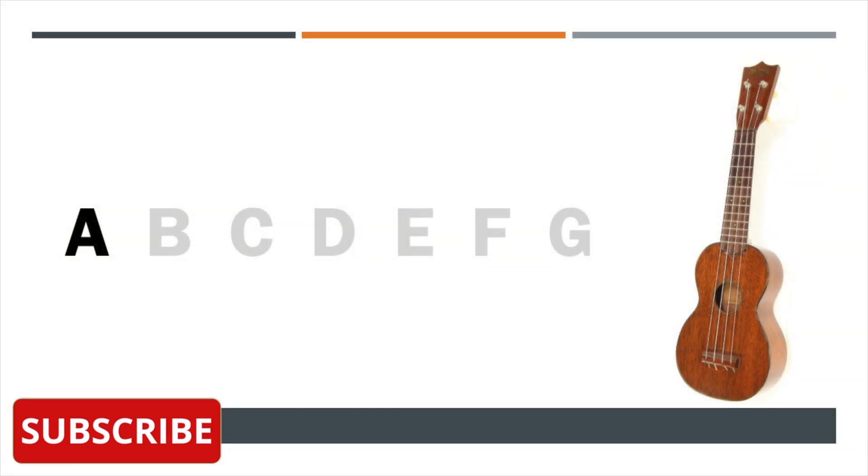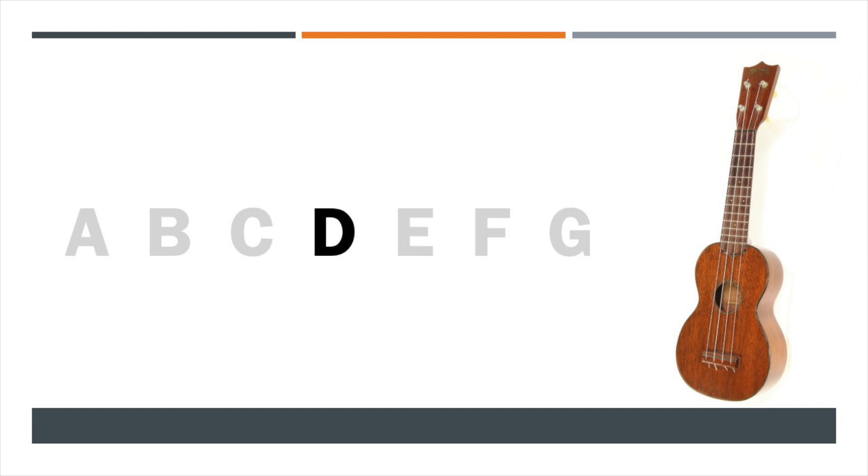The main thing to know with the musical alphabet is that we only use the first seven letters of our standard Latin or Roman alphabet, so we just have the letters A, B, C, D, E, F and G. Once we've got to G, the next letter would be an A again.